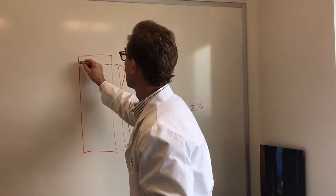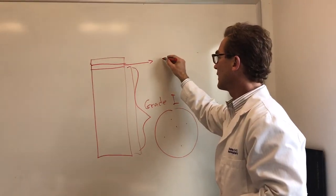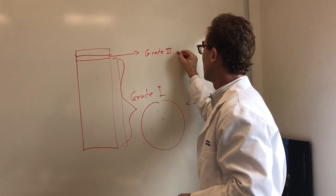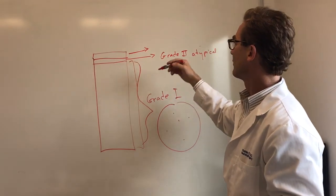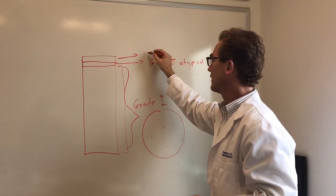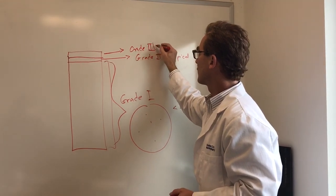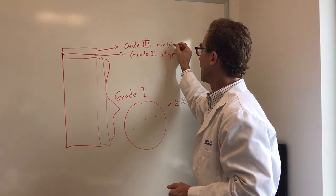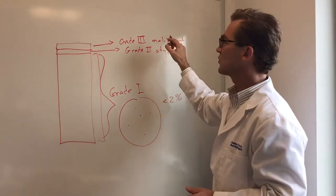Then there's another level called grade 2, or atypical. And then there are grade 3. And these are more malignant. So, grade 2, atypical, and grade 3 are much more dangerous.